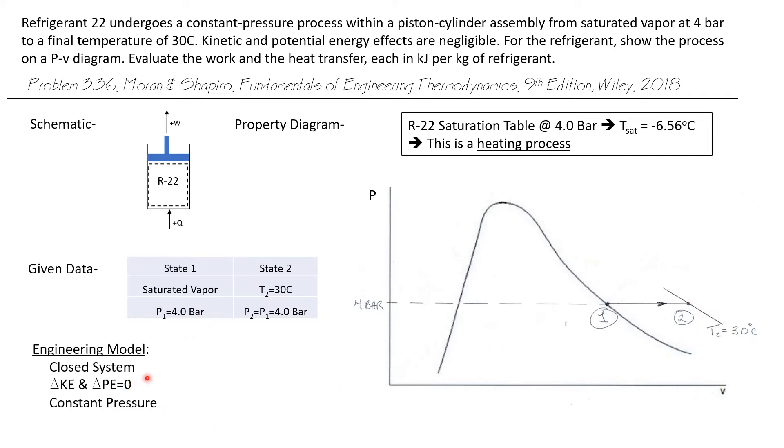We're going to model this as a closed system. We're ignoring all kinetic and potential energy effects as being zero. It is a constant pressure process, and we want to find both the work and the heat transfer in units of kilojoules per kilogram of refrigerant.